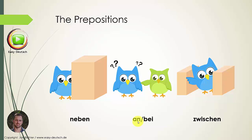If we talk about a person, we have to use bei. For example: Ich bin bei Maria — so I'm at Maria's house. I cannot use an here because an is exclusively for things. But bei can be used for things as well — for example: Ich bin bei der Bushaltestelle — I'm at the bus stop. If you always use bei, it's never wrong, but you have to understand an as well. An is used exclusively for things, never for people, and both mean you're close to somebody or something.